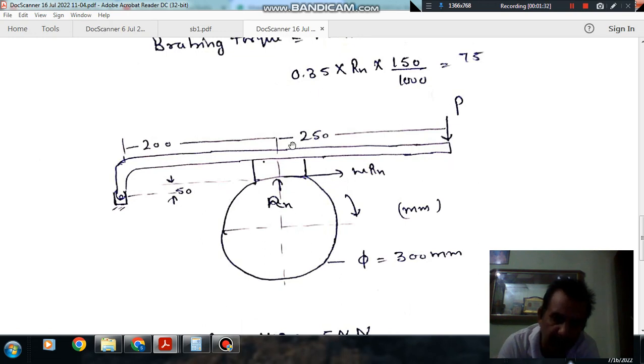P is acting in the outward direction. These are all the dimensions: 250 mm, 200 mm, 50 mm, and the diameter of the drum is 300 mm.